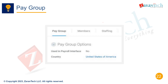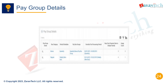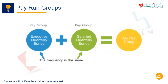Pay Groups combine workers that are paid together on the same schedule. Access to pay groups can be restricted based on organization and role security policies. Key details like pay group name, run category, and organization are defined during pay group setup.